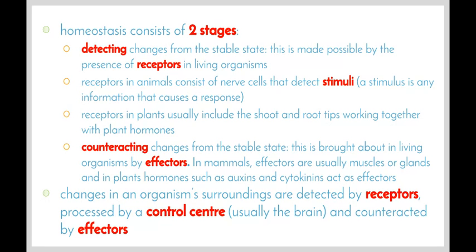Once a change has been detected, our bodies and other organisms' bodies need to counteract these changes to bring it back to the stable state. This is brought about by structures called effectors. In mammals, effectors are usually muscles or glands, and in plants, hormones such as auxins and cytokinins act as effectors. Changes in an organism's surroundings are detected by the receptors, processed by a control center — which in our case is our brain — and counteracted by effectors.